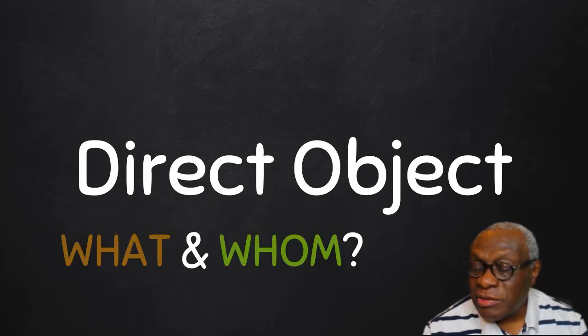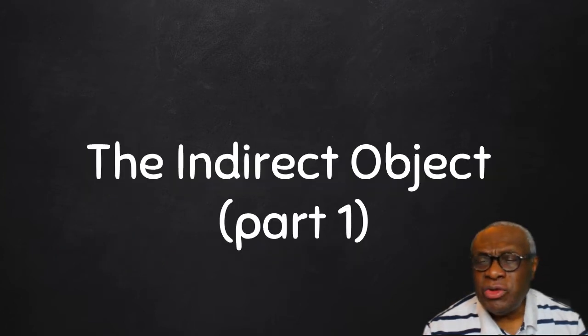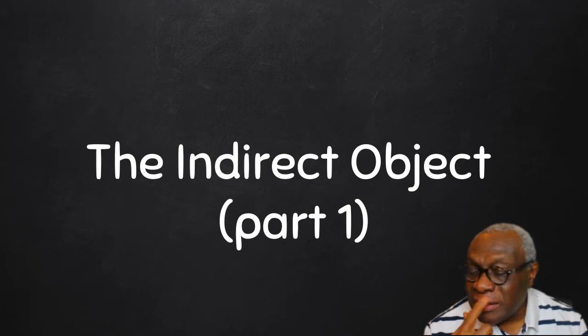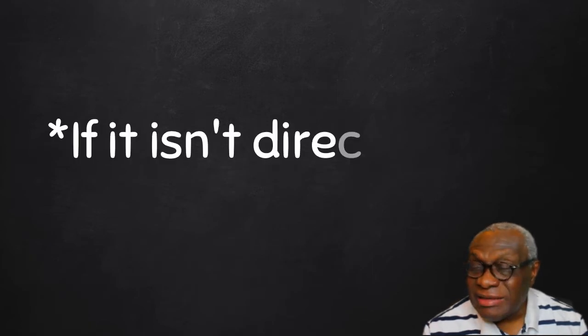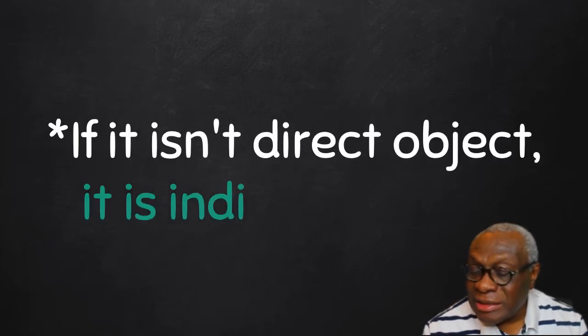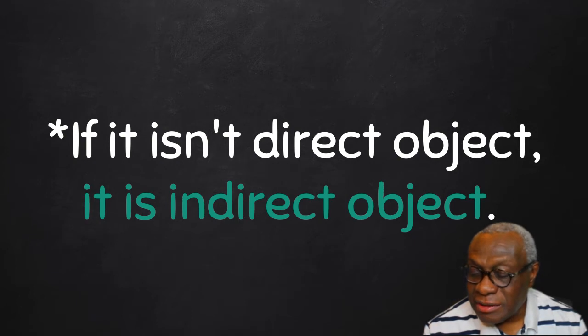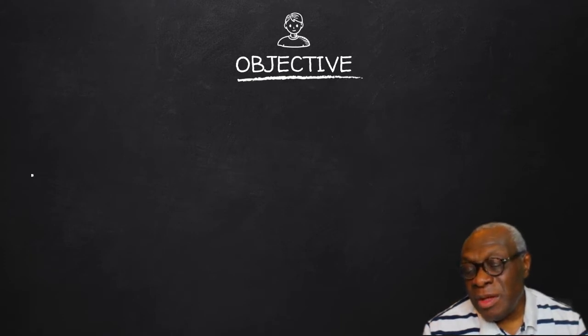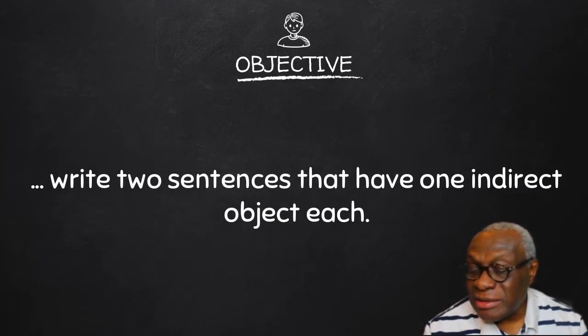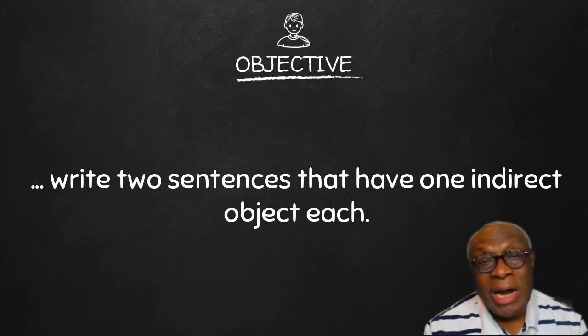Today we're going to start looking at the indirect object in two parts. Part one is today. The indirect object is as simple as this: if it isn't direct object, it is indirect object. And that's our objective for today. By the end of today's lesson, we should be able to write two sentences which have one indirect object each.